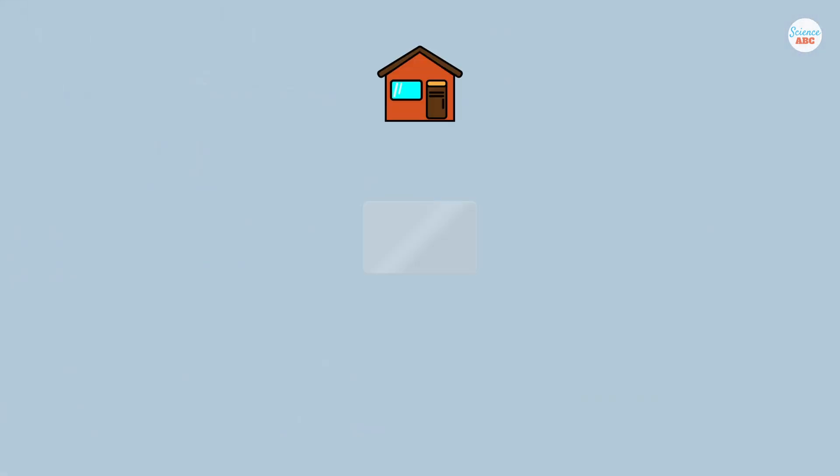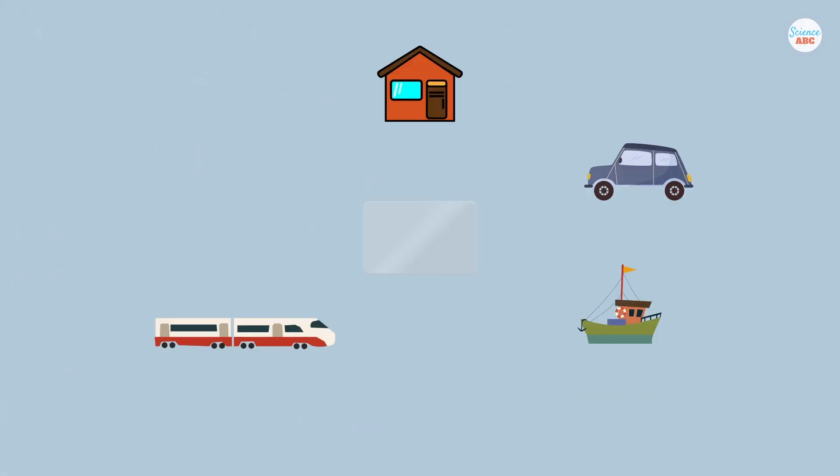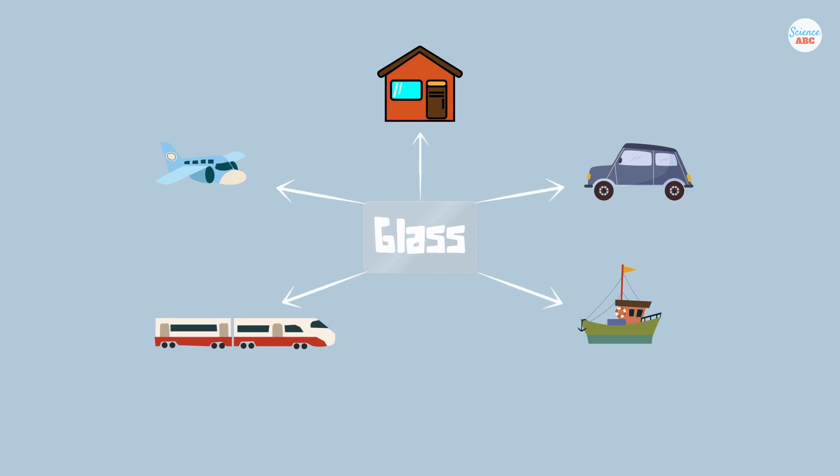Today, there are few areas of life where glass is not used in some way. The windows of houses, cars, ships, trains, and even airplanes are made from glass.